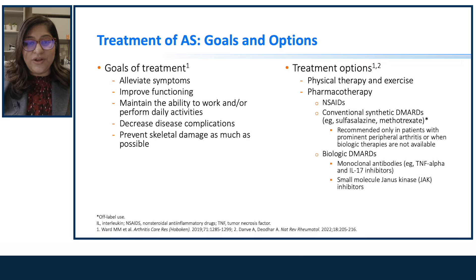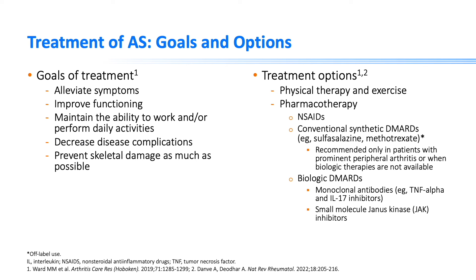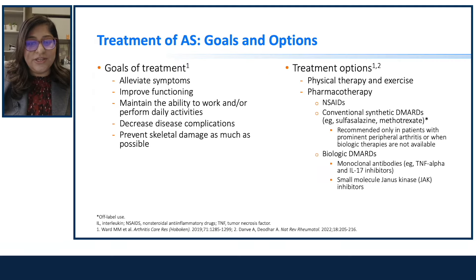The main goals of treatment for ankylosing spondylitis are to alleviate symptoms, improve functioning, maintain the ability to work and perform daily activities, decrease disease complications, and prevent skeletal damage as much as possible. Treatment options include physical therapy and exercise. Pharmacotherapy includes NSAIDs and conventional synthetic DMARDs — recommended only in patients with prominent peripheral arthritis where biologic therapies are not available — as well as biologic DMARDs such as monoclonal antibodies and small molecule JAK inhibitors.